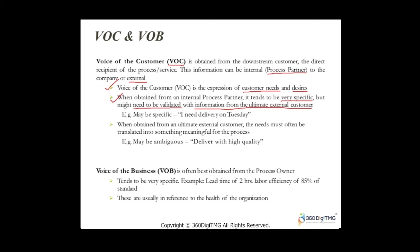When it comes to internal process partners, they clearly say things like 'I need delivery on Tuesday,' as opposed to external customers who might say 'I need faster delivery.' When obtained from the ultimate external customer, the needs must often be translated into something meaningful for the process — it may be ambiguous. An external customer might say 'deliver with high quality,' while an internal partner says 'deliver with not more than two defects per product.'